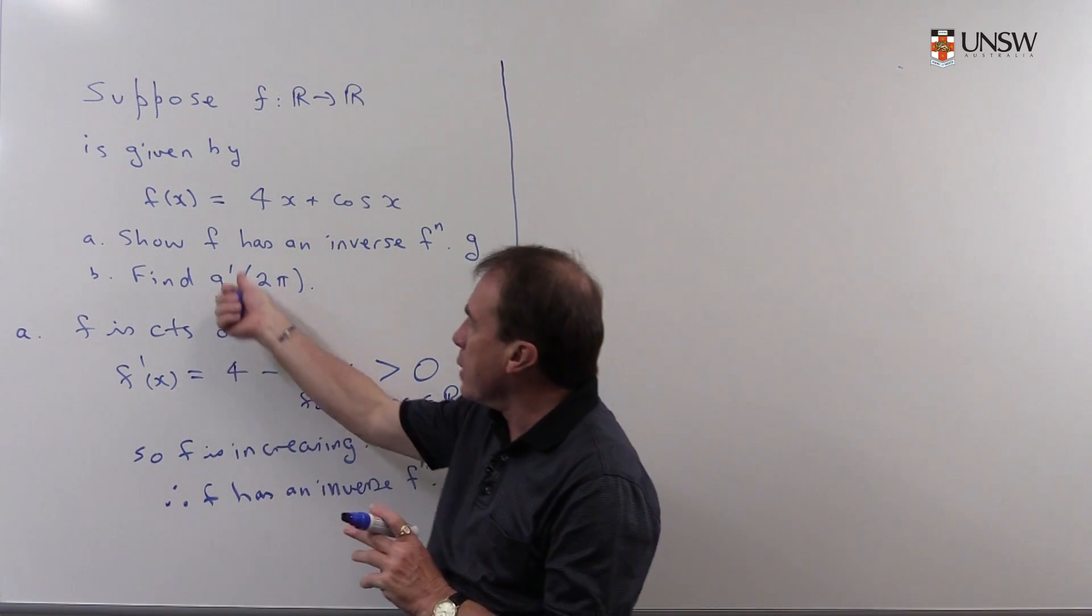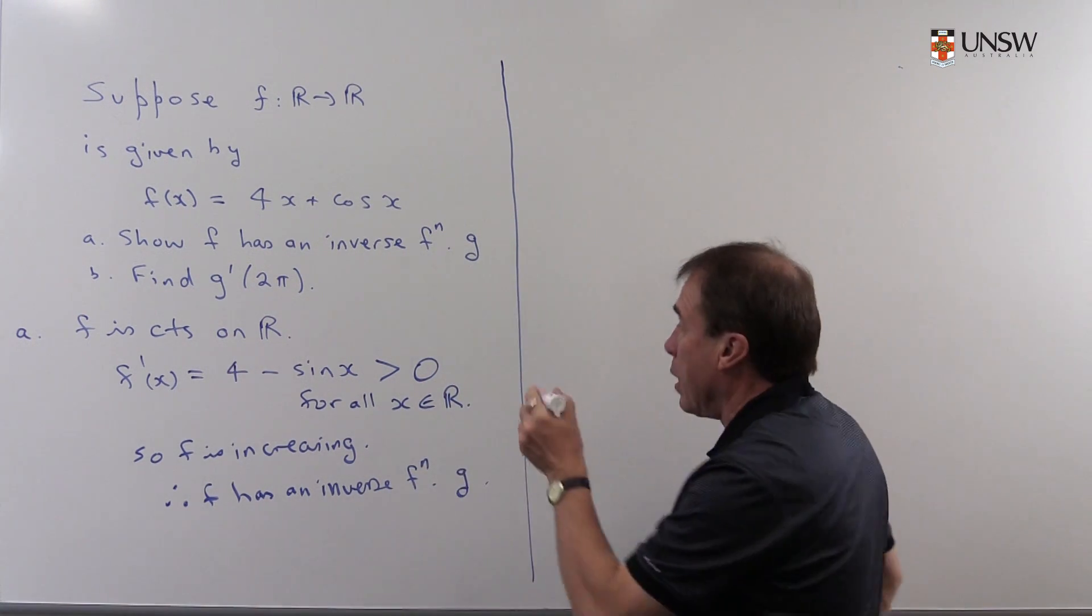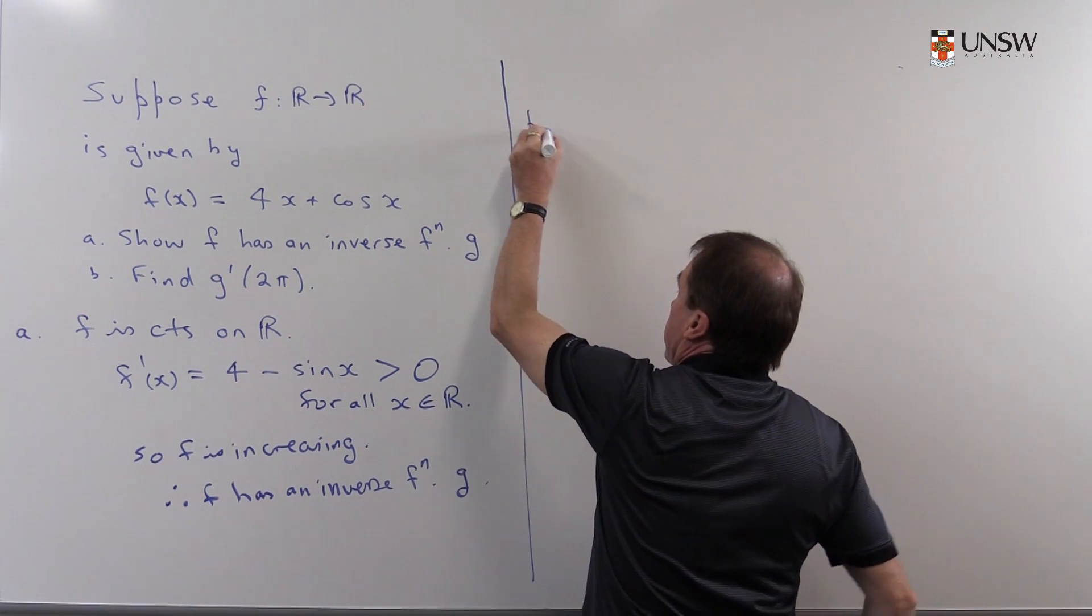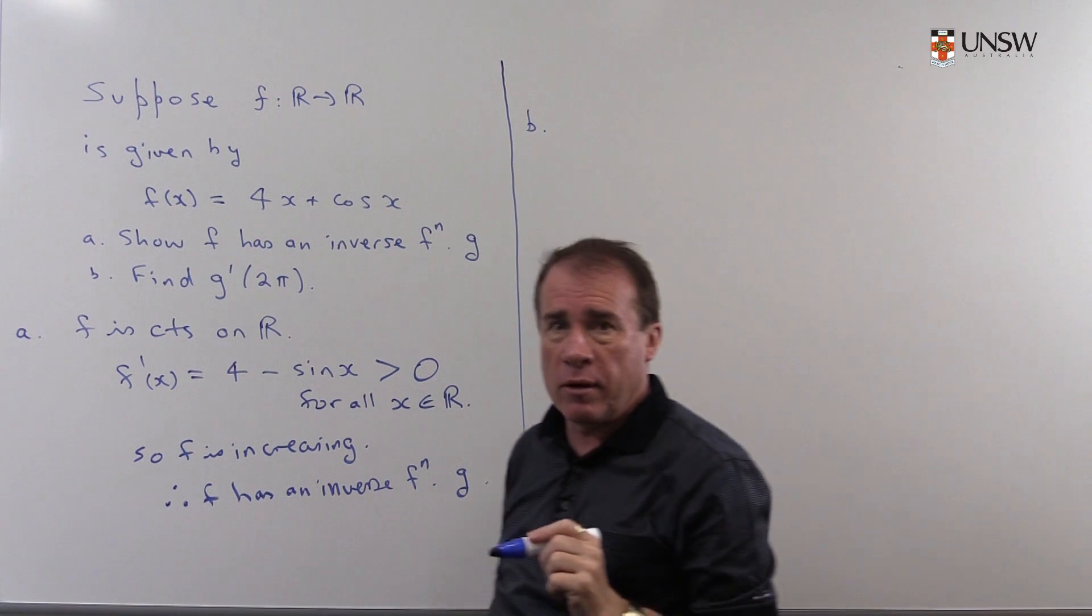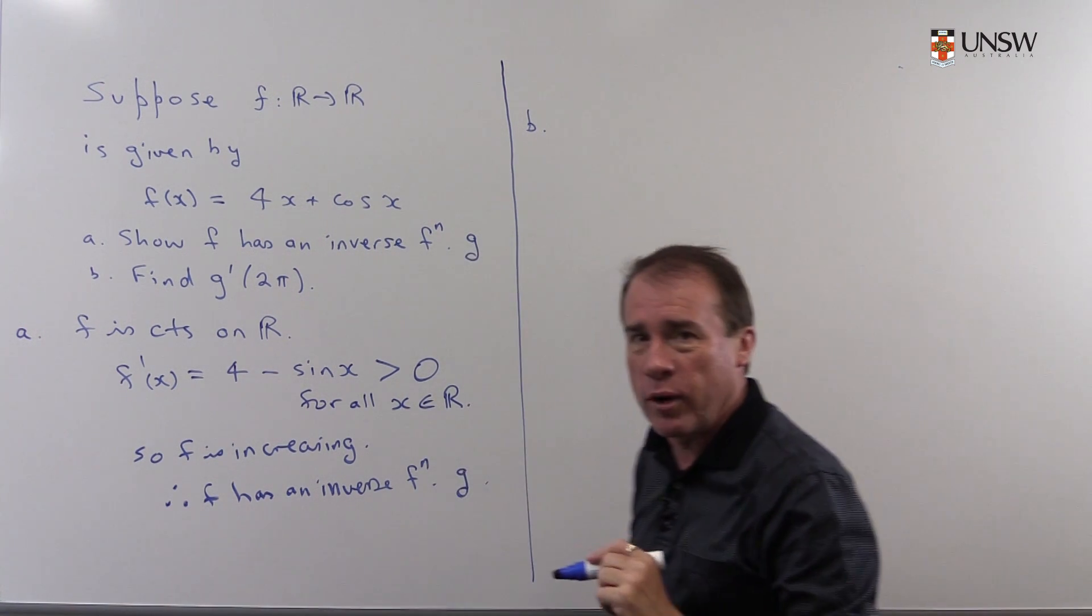Nonetheless, we can calculate the derivative of the function at 2π. And there's a formula for this. I always forget the formula, so you'll excuse me if I re-derive it again very quickly.